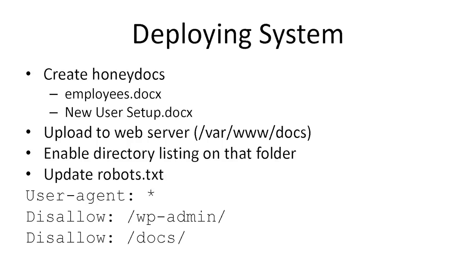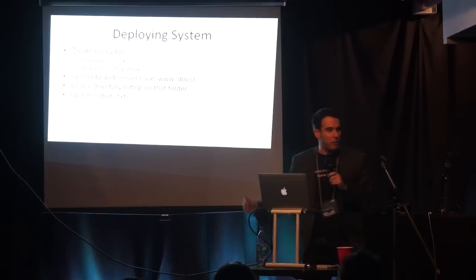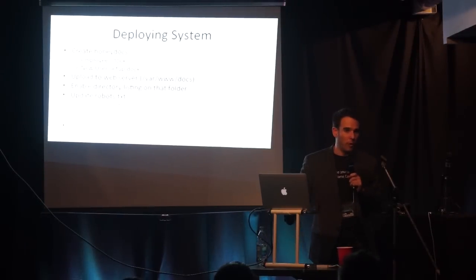Here's how to do this. First, we need to create the honey documents. Make sure you name them with interesting file names like 'passwords,' 'employees,' or 'new account setup' — these are probably the files an attacker would want. On your web server, create a new folder and specifically enable directory listing on it — I'll show you why. Be careful and make sure all other directories don't have directory listing. Then update the robots file and add some lines like that, so as an attacker, once you see something like 'docs' in that file, that's probably one of the first places you'll go.